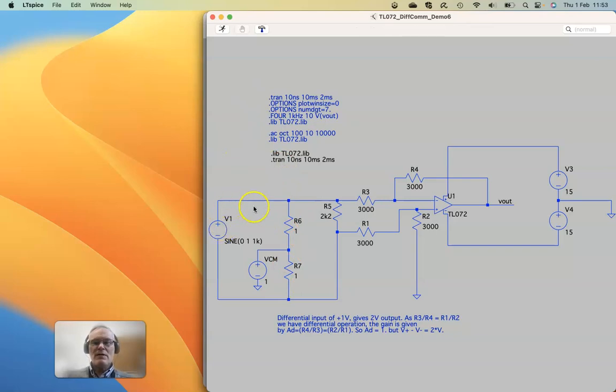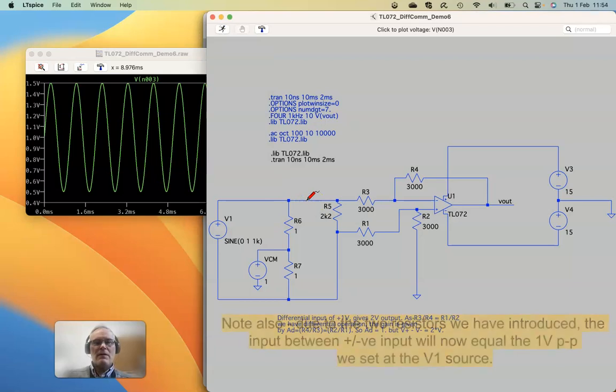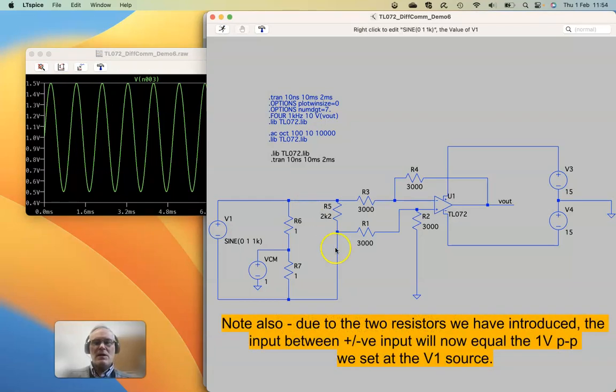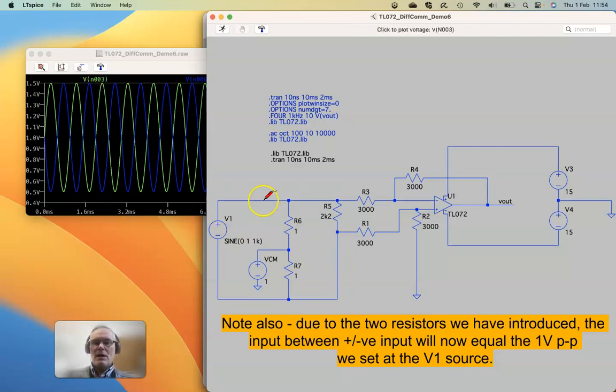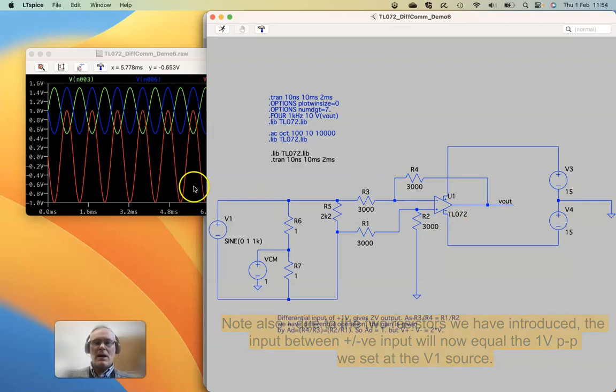So this positive phase has this path. This negative phase has this path. Now, if we run this, what we'll see is we have our positive, and we also have our antiphase negative, and we get our output.